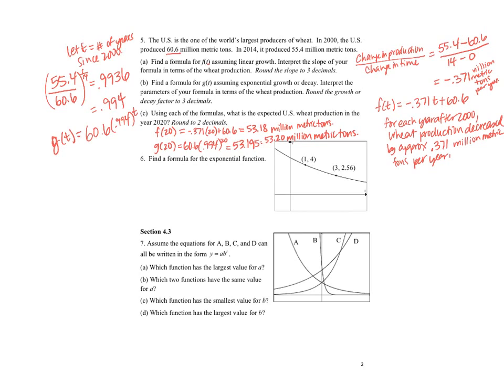Now it says find a formula for this exponential function. I know that to get from 1 to 3 is a change in 2 units. So if I do 2.56 divided by 4, that's going to give me my 2 unit decay factor. To get my 1 unit decay factor, I need to take the square root of that, or in other words, take that to the 1 half power. And so I get 0.8. That's my value of B.